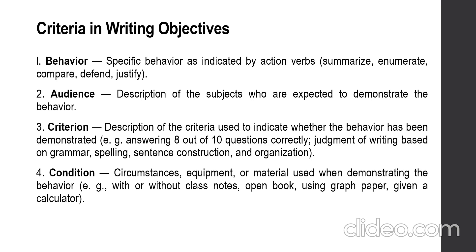The third criterion is the description of the criteria used to indicate whether the behavior of the audience has been demonstrated. And lastly is the condition, which refers to the circumstances, equipment, or material to be used by the audience when demonstrating the behavior.